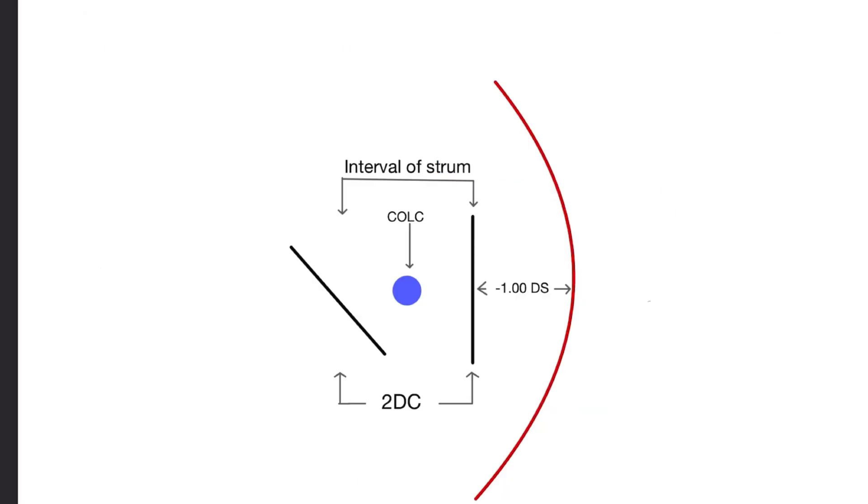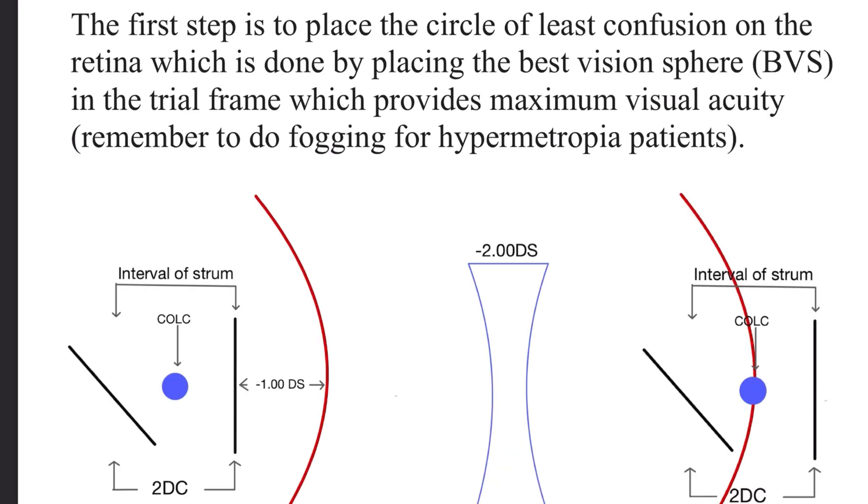Suppose we have one patient whose refractive error is minus one diopter sphere with minus two diopter cylinder axis 180 degrees. So the first step before we show the patient the astigmatic chart is to place the circle of least confusion on the retina, which is done by placing the best vision sphere (BVS) in the trial frame which provides maximum visual acuity. Remember to do fogging for hyperopia patients.